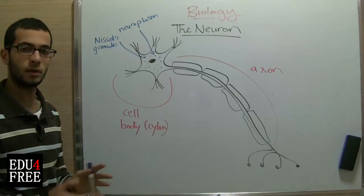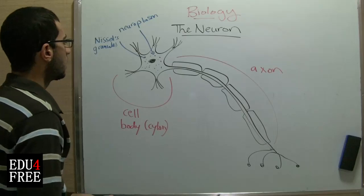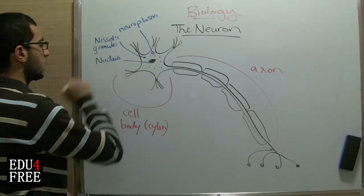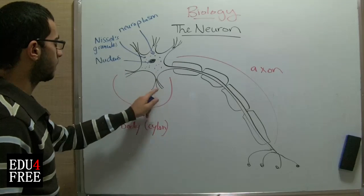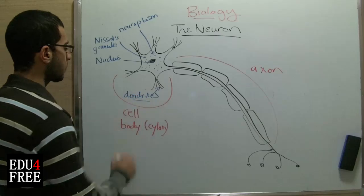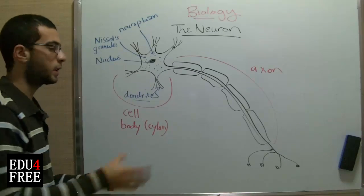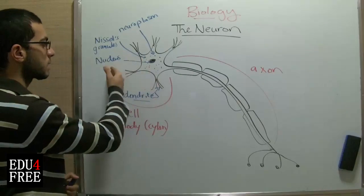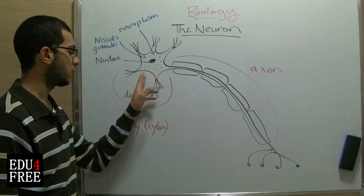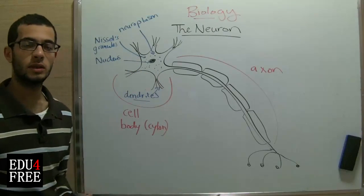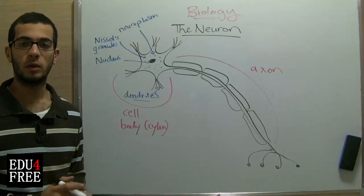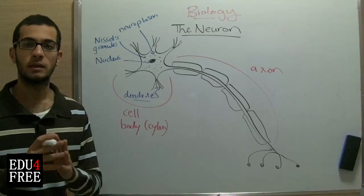Nissl's granules are unique for the nerve cells — they are not found in other types of cells. And of course, this is the nucleus. And we have these extensions here, which are called dendrites. These dendrites extend from the cell body in order to connect this neuron with the next neuron. Now, a very important note is that the cyton of the neuron doesn't contain centrioles. It contains all the other organelles found in a normal animal cell, but it doesn't contain the centrioles.